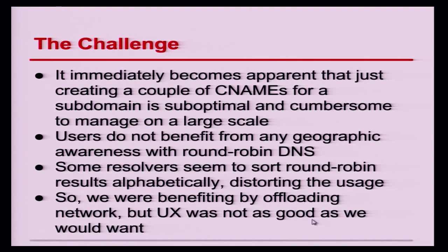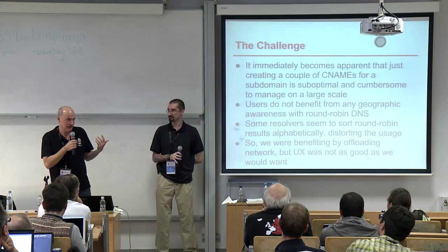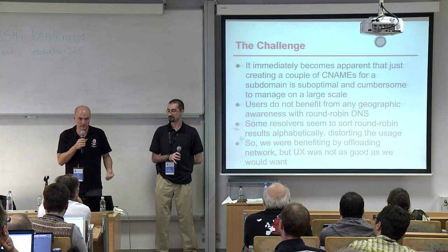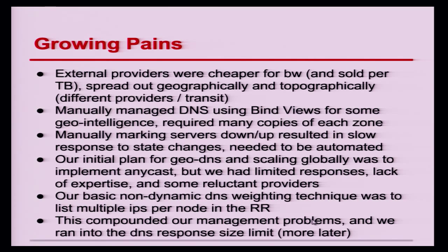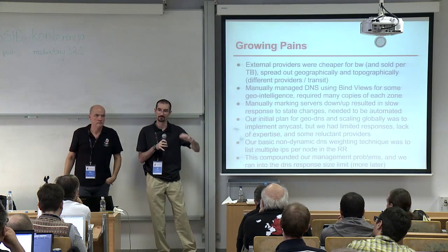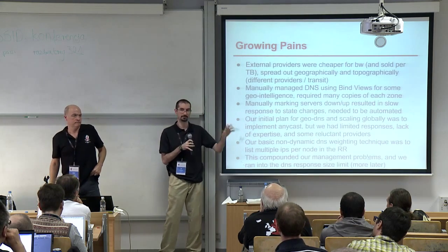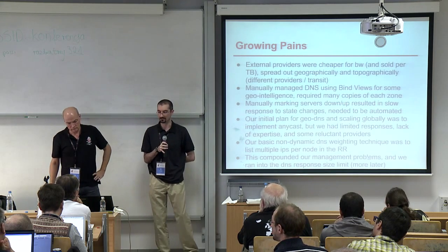So we're benefiting by offloading network, but user experience isn't as good as we want. Growing pains: external providers are cheaper for bandwidth, sold in large amounts, and they sold us transfer per terabyte rather than 95th percentile. For our bursty type of traffic that meant much easier pricing. The other advantage of going with separate external providers was getting different locations instead of managing co-location at all points on the globe.